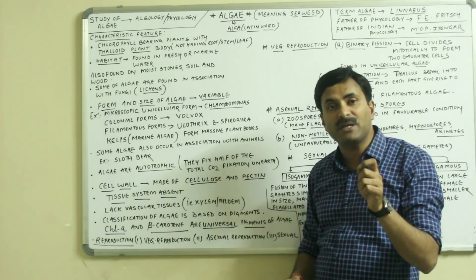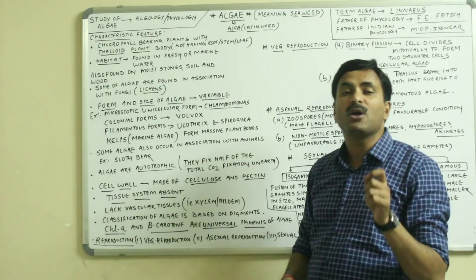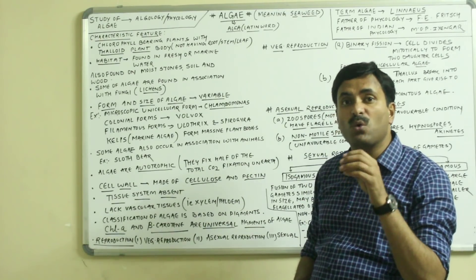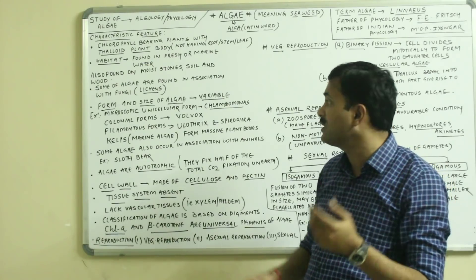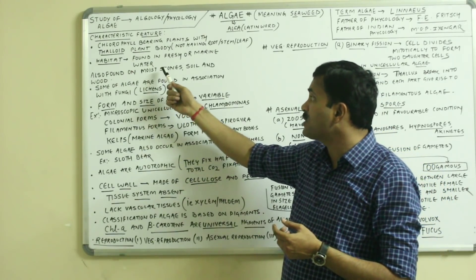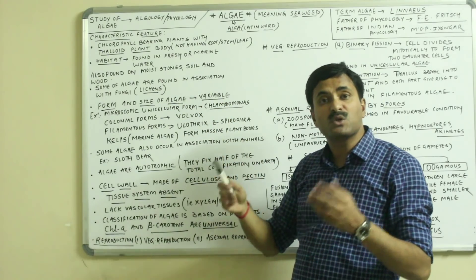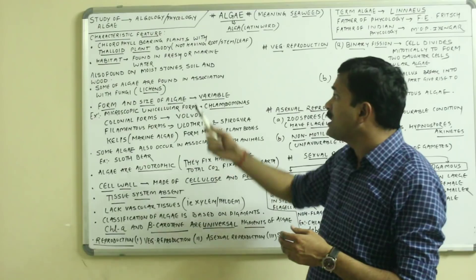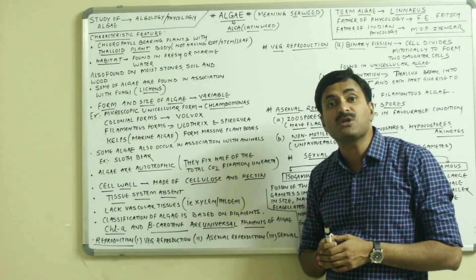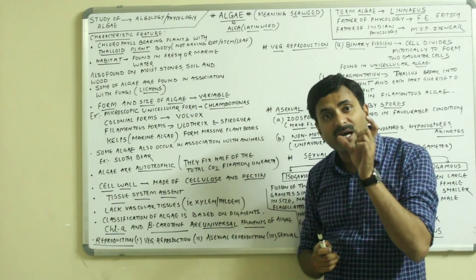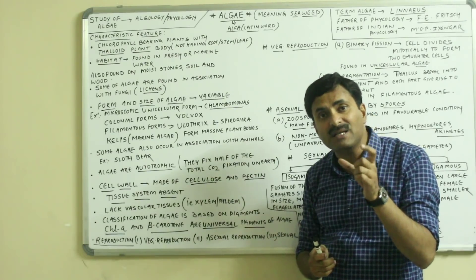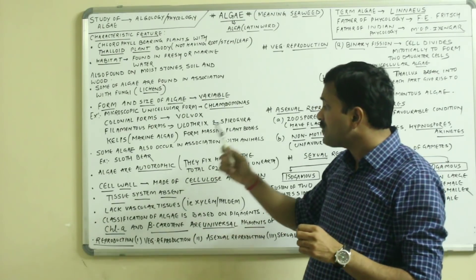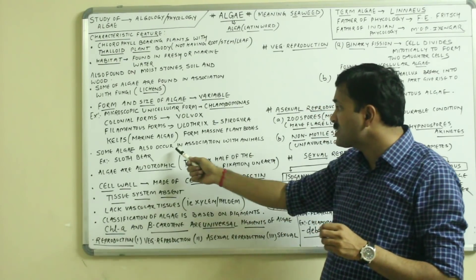Regarding habitat, maximum algaes are found in an aquatic environment. They may be found in fresh water or they may be found in marine water. But there are various other habitats where algaes may be found — say for example they may be found on moist stones, soil, wood, and snow. Some algaes are also found in association with fungi, and the association of the algae and the fungi is called as the lichen.